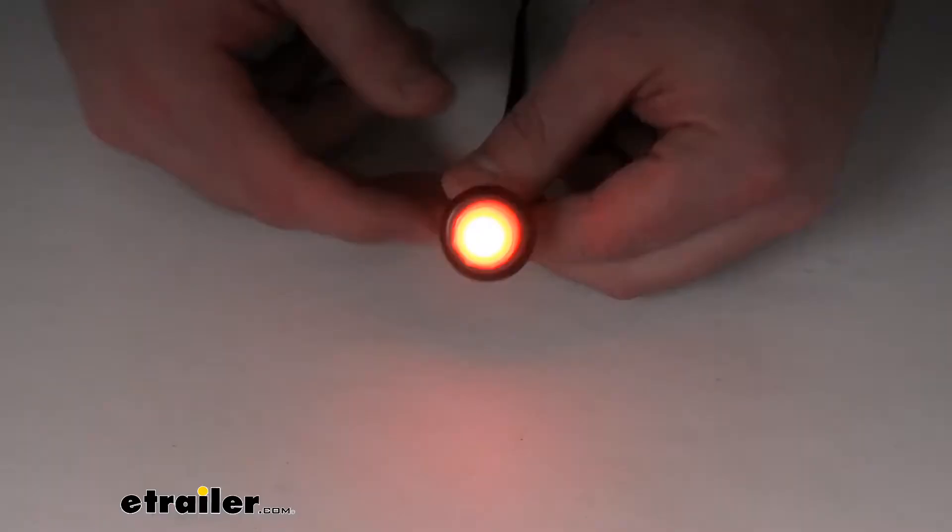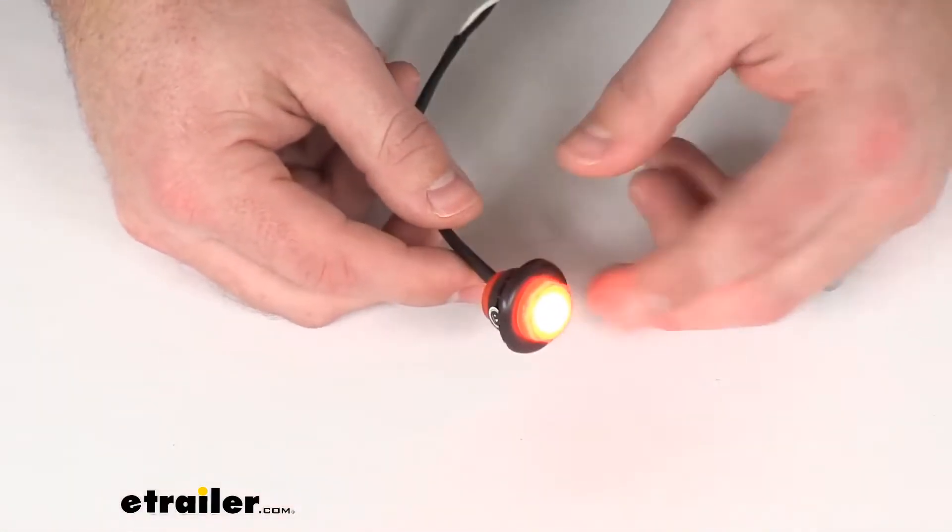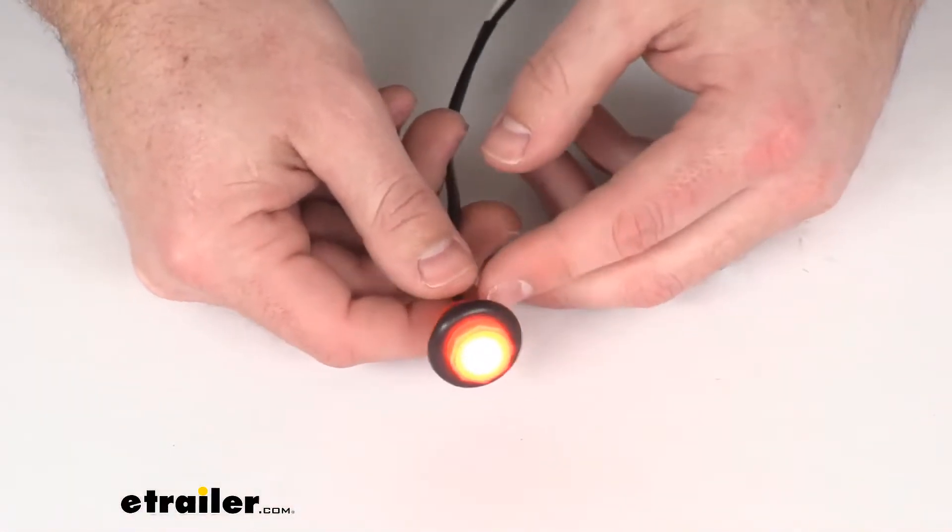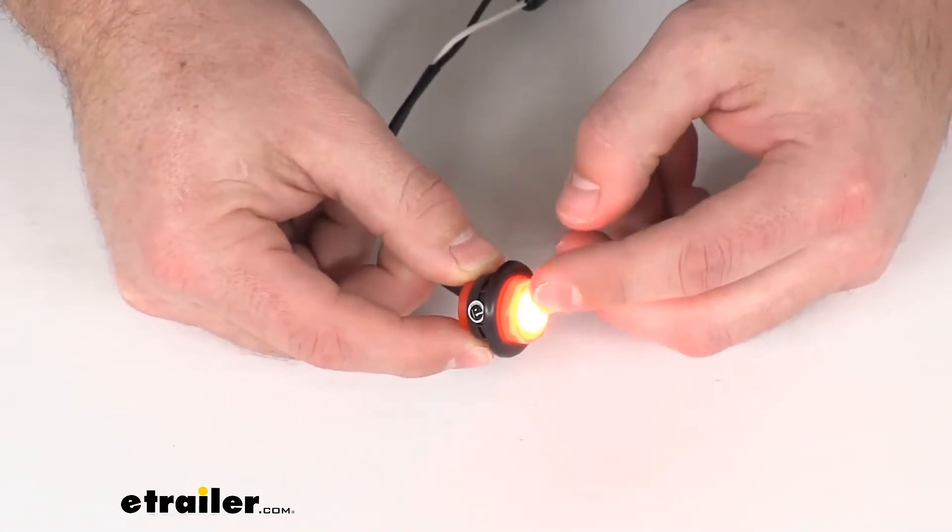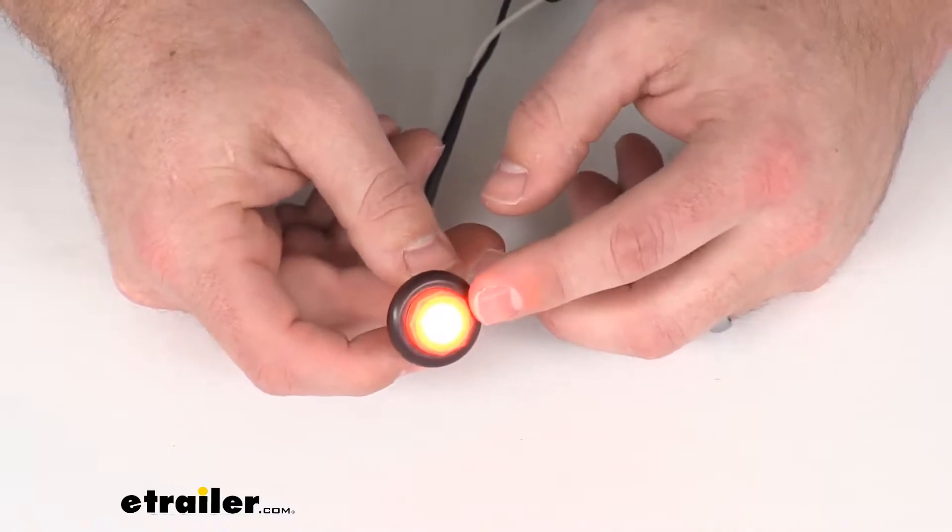This is a sealed waterproof construction, so it is submersible. If you want to put it on your boat trailers, it'll do just fine there. This is a red acrylic lens over top two white LEDs.